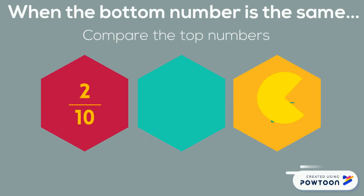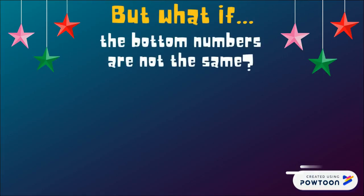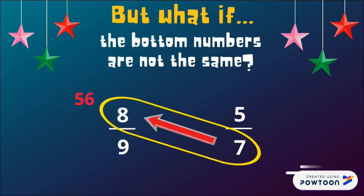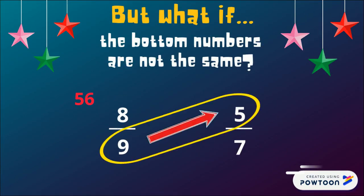Cross multiplying can also be used when the bottom number is different. We can multiply seven times eight to get 56 and nine times five to get 45. Then we can compare those brand new numbers, making eight-ninths a bigger fraction.